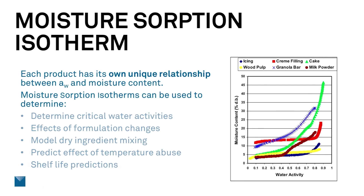This relationship between water activity and moisture content is called moisture sorption isotherms and can be used to determine critical water activities — where the moisture sorption properties change, meaning that products physically change and can take up more moisture. We can determine that where there is a change in slope of the curve. When these changes happen, we start seeing changes in texture and other changes. You can also determine the effect of formulation by comparing different isotherms, model dry ingredient mixing, determine the effect of temperature abuse, and isotherms are essential for predicting shelf life.